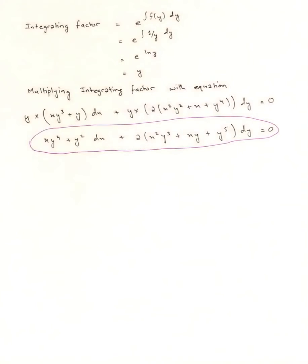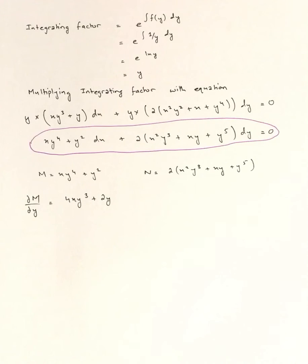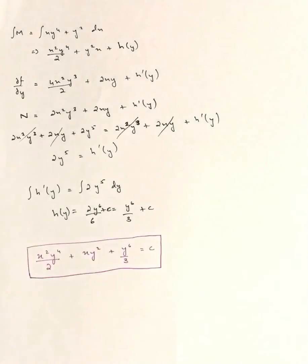For the new equation, the new M = xy⁴ + y² and new N = 2(x²y³ + xy + y⁵). Partially differentiating the new M with respect to y gives 4xy³ + 2y, which equals ∂N/∂x. Since ∂M/∂y = ∂N/∂x, the equation is now solvable by the exact method. Solving gives: x²y⁴/2 + xy² + y⁶/3 = c.